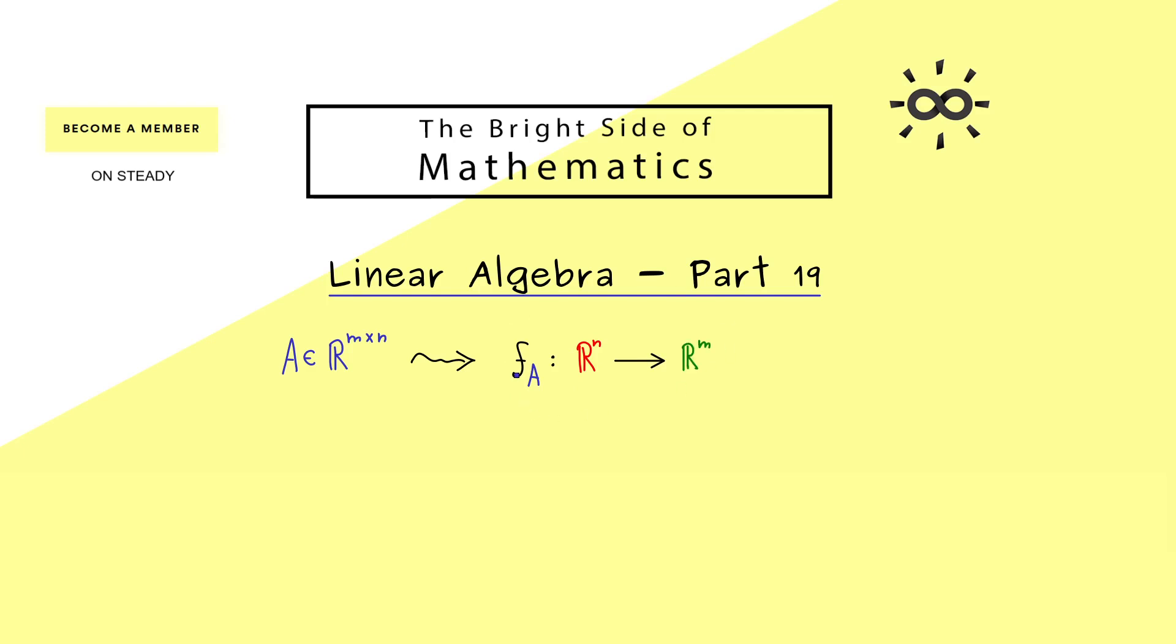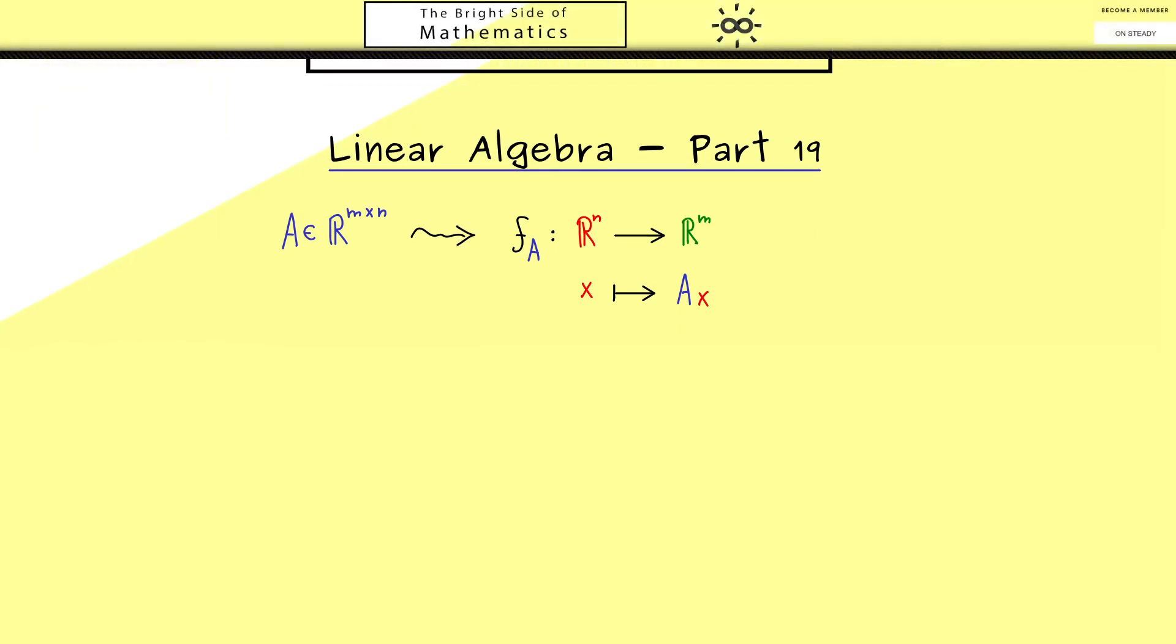And now we know, this map is defined by using the ordinary matrix vector multiplication. In other words, the vector x is sent to A times x. And now because we know the definition of a linear map, we can show that this f_A is indeed also a linear map. And because this is such an important fact, let's formulate this with a proposition.